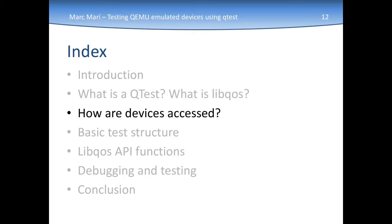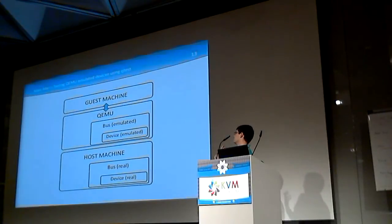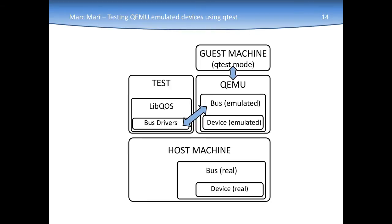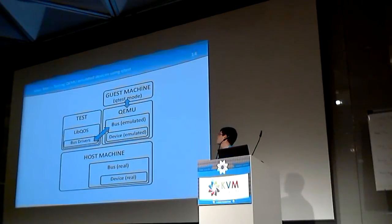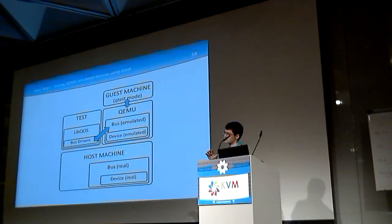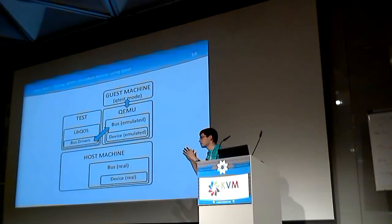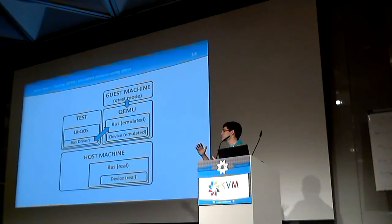Now I'll talk about how devices are accessed. This is how a usual emulated guest works in QEMU, and this is how it works when it's in test mode. The guest machine is in Qtest mode, which means it's not running guest code. Next to QEMU there is the test, which through LibQOS is talking directly with the emulated device. If the test is testing a PCI device, LibQOS will send the PCI request directly to QEMU and read the answers from there, so no guest interaction has to be done.